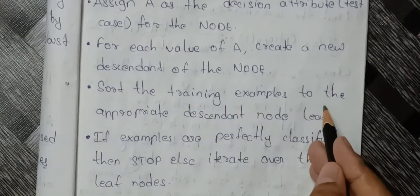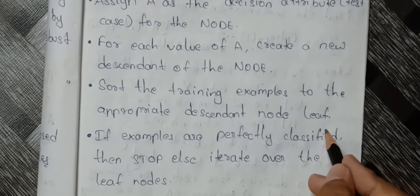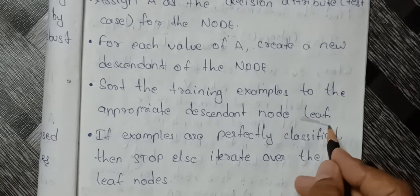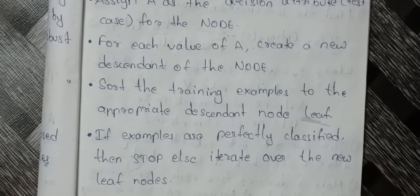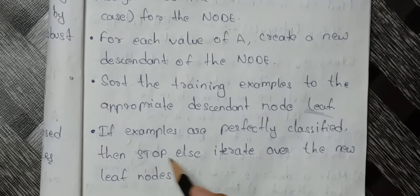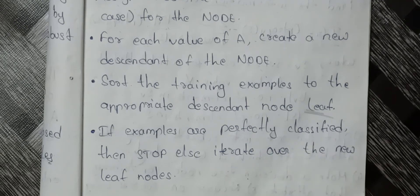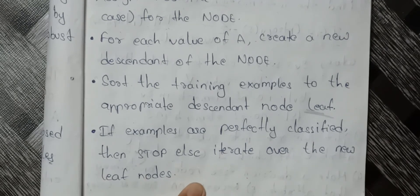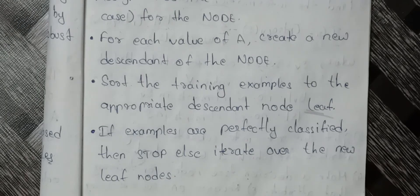Sort the training examples to the appropriate descendant node leaf until the end is complete. The first classification will finally reach the leaf. If examples are perfectly classified, then stop. Otherwise, iterate over the new leaf nodes so they will be able to reach the leaf.